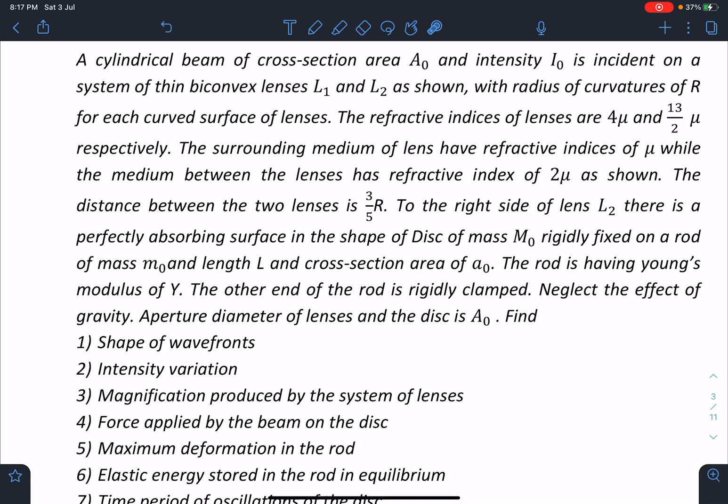A cylindrical beam of cross-section area A₀ and intensity I₀ is incident on a system of thin biconvex lenses L₁ and L₂ as shown, with radius of curvature R for each curved surface of the lenses. The refractive indices of lenses are 4μ and 13/2μ respectively. The surrounding medium of lens has refractive indices of μ, while the medium between the lenses has refractive index of 2μ as shown.